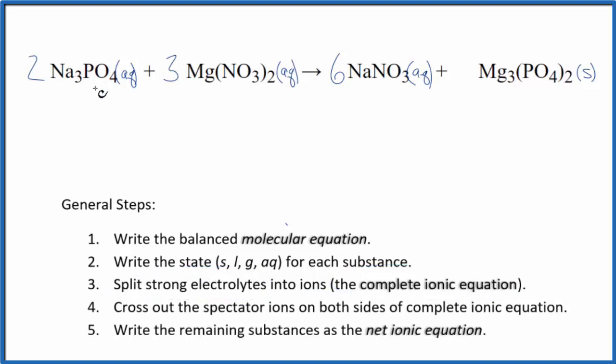So on the periodic table, sodium is in group 1, 1 plus ionic charge. That whole phosphate 3 minus, good one to remember. 2 times 3 is 6, so 6 sodium ions.